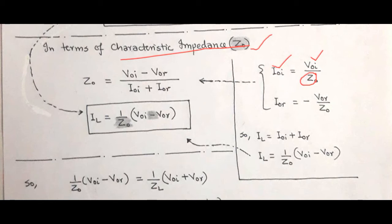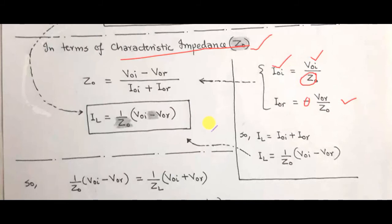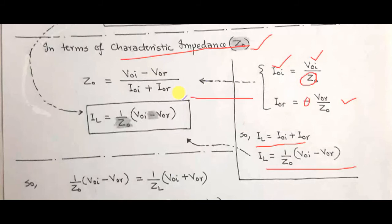The reflected current amplitude equals minus the reflected voltage amplitude divided by Z0. The load current equals the summation of incident and reflected current amplitudes — that is, I_naught_I plus I_naught_R. In terms of characteristic impedance, the load current I_L equals (1/Z0) times (V_naught_I minus V_naught_R). Therefore, Z0 equals (V_naught_I minus V_naught_R) divided by (I_naught_I plus I_naught_R), where V_naught_I and V_naught_R are the incident and reflected voltage amplitudes.